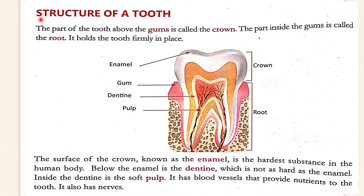Now let's see the structure of a tooth. The part inside the gum is called the root, and the part above the gum is called the crown. The surface of the crown is called enamel — enamel is the hardest substance in the human body. Inside the enamel there is dentine, which is not as hard as enamel. Inside the dentine there is pulp, which has blood vessels and nerves that provide nutrients to our tooth.